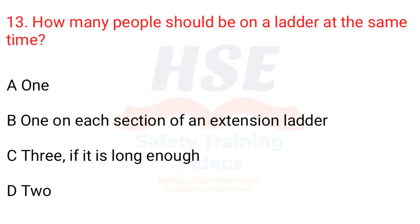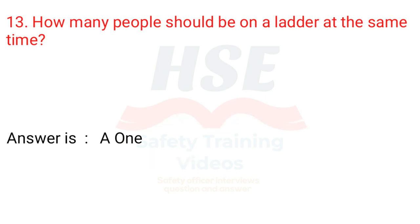Question 13: How many people should be on a ladder at the same time? A. 1. B. 1 on each section of an extension ladder. C. 3, if it is long enough. D. 2. Answer is A. 1.